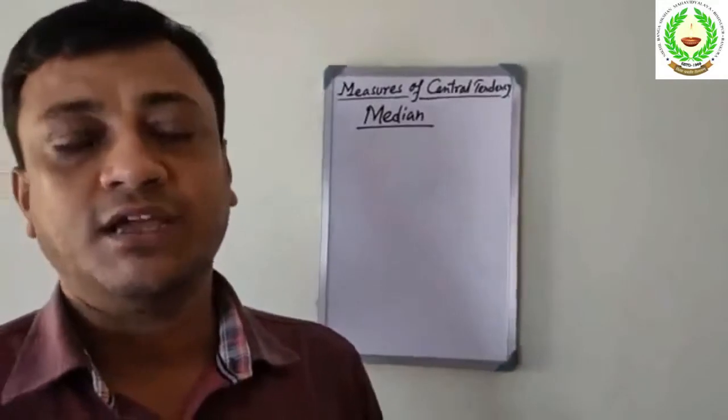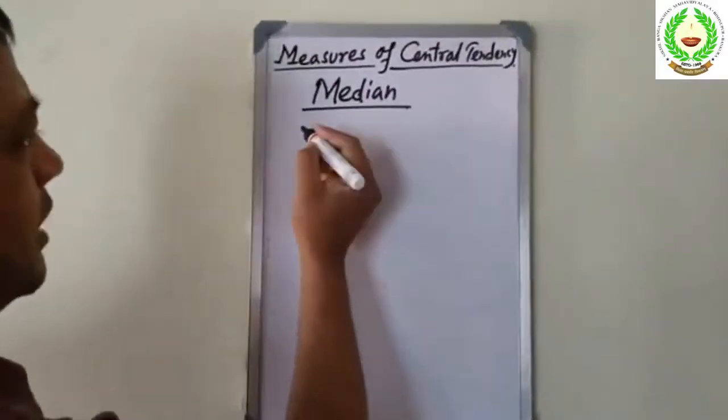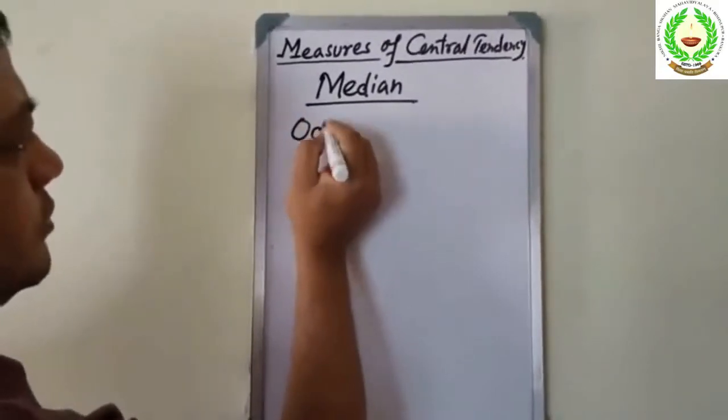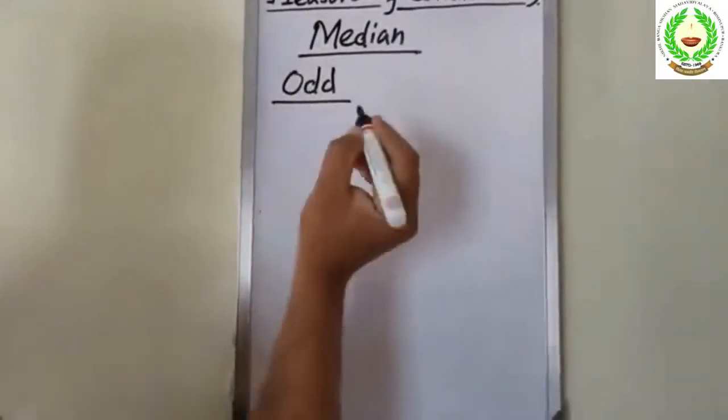We will also find the median for grouped data and ungrouped data. For ungrouped data with an odd number of observations, the median is the middle value.